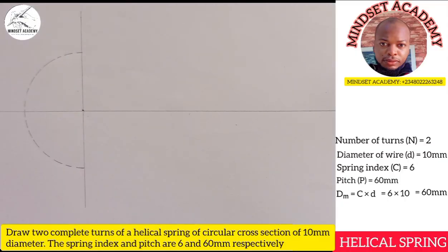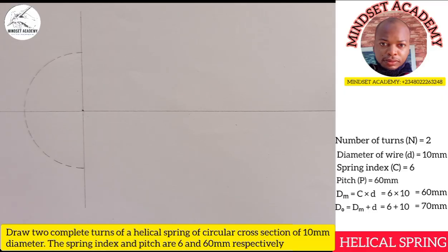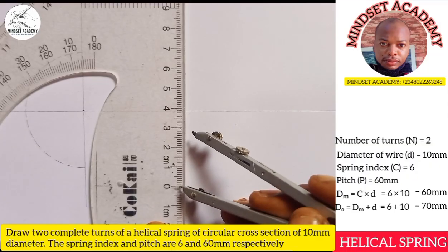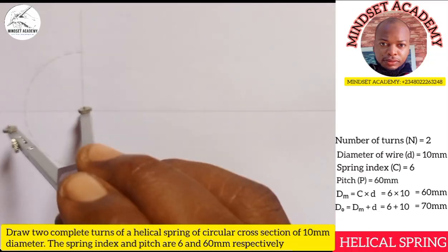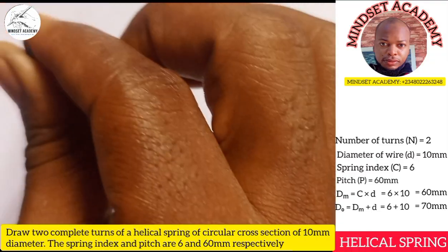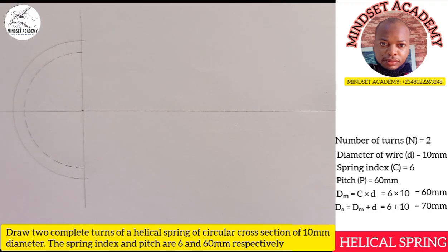That is our mean diameter. Now, the outer diameter equals the mean diameter plus the circular cross-section: 60 + 10 = 70mm. I'll take half of 70, which is 35, place it at the centre, and draw it this way.